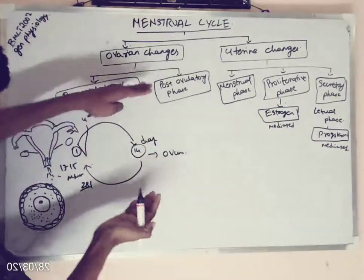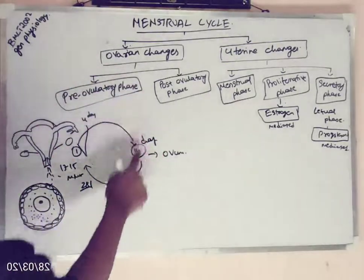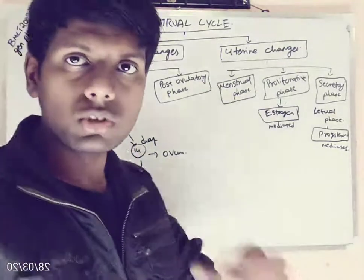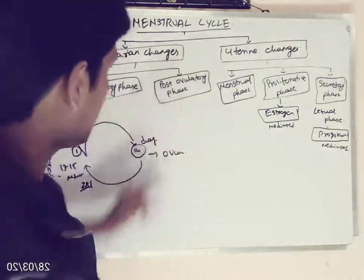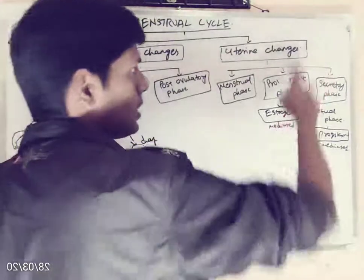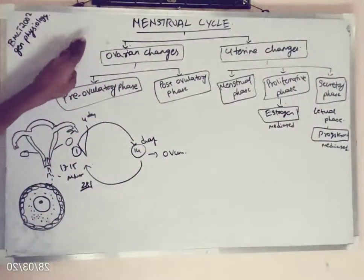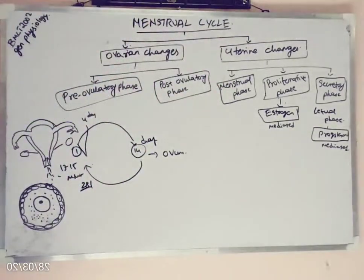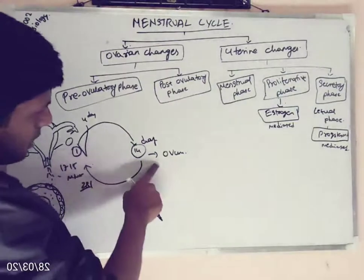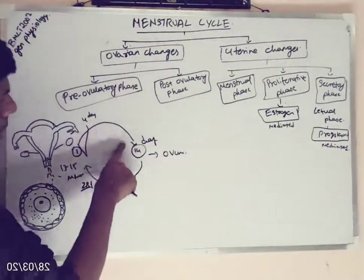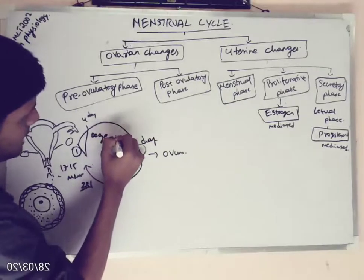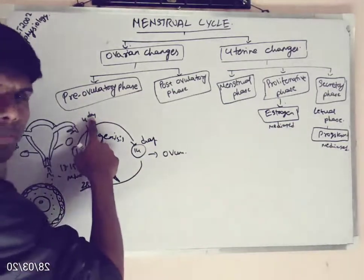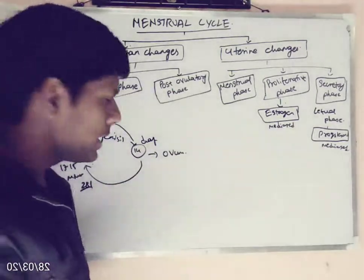The menstrual cycle has two important phases: pre-ovulatory phase and post-ovulatory phase. The events of the menstrual cycle can be divided into two broad categories: changes in the ovary and changes in the uterus. In the ovary, before release of the ovum, it will undergo a process called oogenesis, which happens from after the 4th day of the period to the 14th day. That period is called the pre-ovulatory phase.